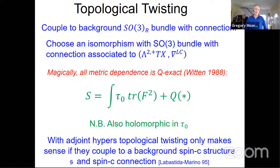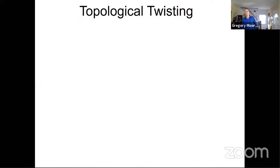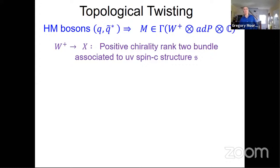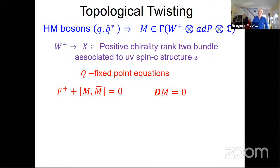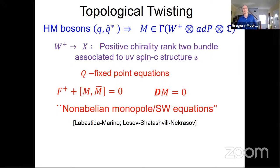With the adjoint hypermultiplet, the topological twisting only makes sense if you couple to a background spin-C structure with spin-C connection. The reason is that the hypermultiplet bosons Q, Q-tilde-star form an SU(2) R-symmetry doublet that's supposed to become a spinor, and if your 4-manifold doesn't have spin structure, you're in trouble. So you introduce a spin-C structure. Let W+ be the complex rank-2 bundle associated to a UV spin-C structure. Under topological twisting, these fields become monopole fields living in W+ tensored with the complexified adjoint bundle.